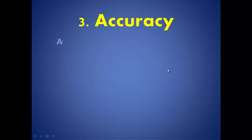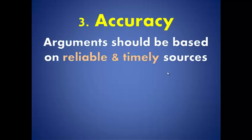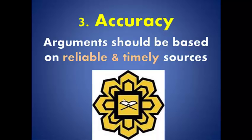The third standard is accuracy. Accuracy means that when you argue, your arguments should be based on reliable and timely sources. You may relate this to the Quran, which is the most reliable source and is relevant across time — it will not be outdated. Reliable means it can be trusted, and timely means it is not outdated, so it can always be used currently.